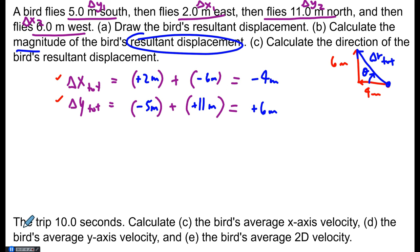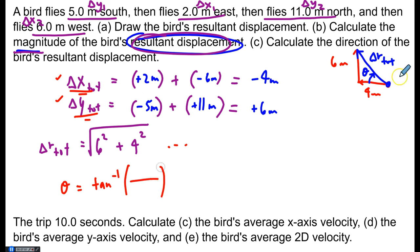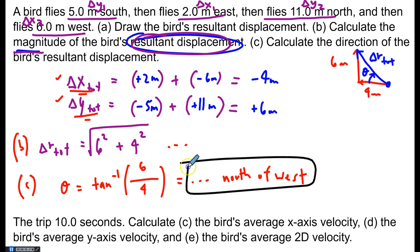Part A of this question asks for the magnitude of the resultant displacement. Part A is asking for delta r total. And this is pretty straightforward. We use the right triangle, Pythagorean theorem. The only difference is now the x and y legs are the total values, right? Because there was more than one displacement on each axis. That's the only difference. And we work out the math. For theta, we use inverse tangent of opposite over adjacent, which comes to 6 over 4. And then whatever that angle value is, the rest of the direction would be to the north of west for this angle. So this is part B, the magnitude. C was the direction, which is this entire answer. It's the angle plus the north of west.